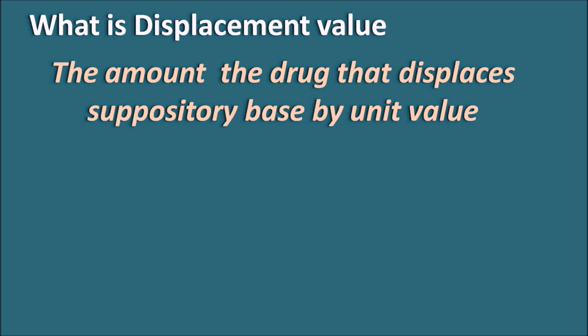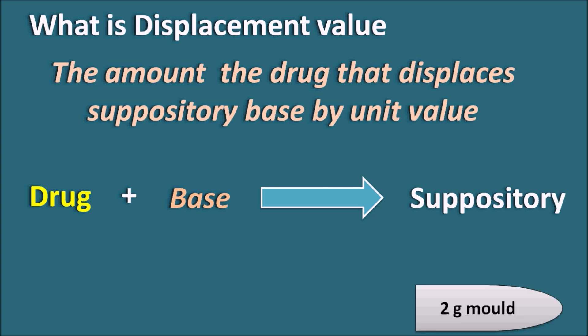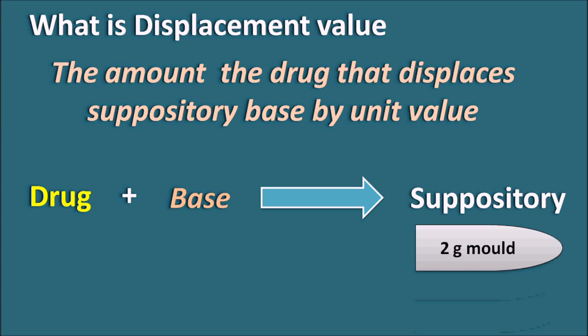In the preparation of a suppository, we mix the drug with the base and then make a suppository by pouring the mixture into a mold, like the 2g or 1g mold. As the volume of each suppository is fixed, when the drug is mixed with the base, the drug will displace some amount of the base. This value is what we call the displacement value.